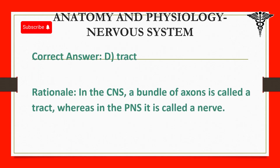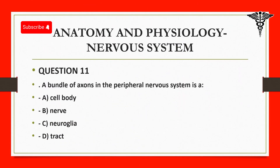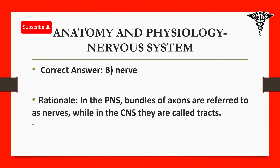Question 11: A bundle of axons in the peripheral nervous system is: A. Cell body. B. Nerve. C. Neuroglia. D. Tract. Correct answer: B. Nerve. Rationale: In the PNS, bundles of axons are referred to as nerves, while in the CNS they are called tracts.